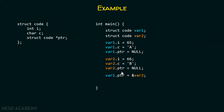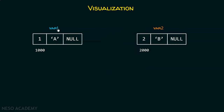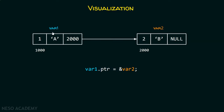Now in the code I have added one more line: var1.ptr = &var2. Previously var1.ptr was initialized with null, but now I am giving the address of var2 to var1.ptr. This means var1.ptr will now contain the address of var2, which is 2000. So var1 now has the capability to access var2, and I have represented this relationship with an arrow in the visualization.